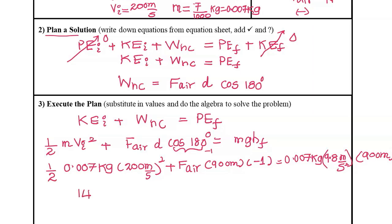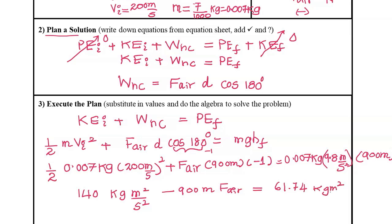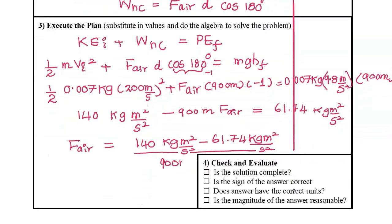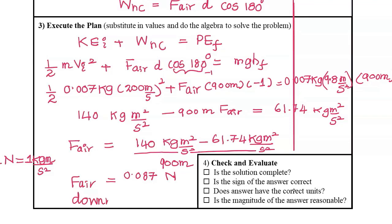Note that you can choose either the initial or final state as your h equals zero level; generally we choose the lowest level as the reference. Solving the equation: 140 kilogram meters squared per second squared minus 900 meters times the force of air resistance equals 61.74 kilogram meters squared per second squared. Separating out and solving for the average force of air resistance gives 0.087 Newtons, where one Newton equals one kilogram meter per second squared.